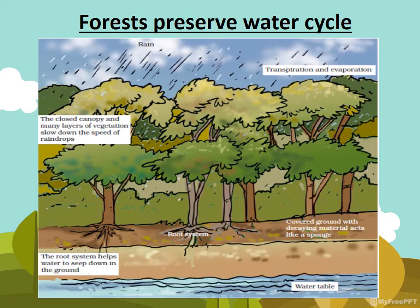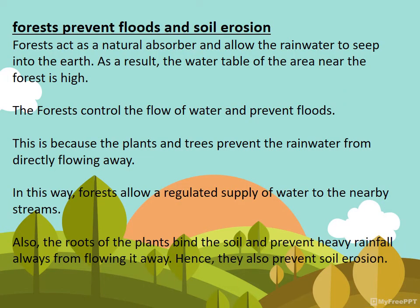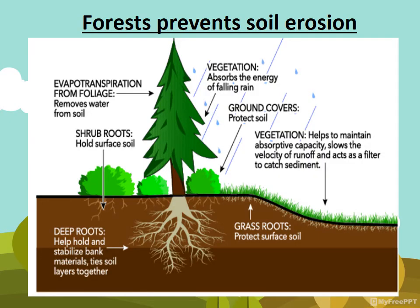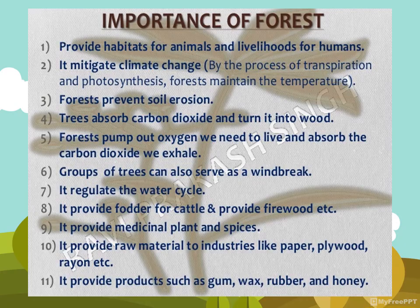Forests also preserve the water cycle. The collection of water from oceans and seas, its circulation, and bringing it back to the land is called the water cycle. Forests play a very important role in maintaining the water cycle. Forests also prevent floods and soil erosion — forests act as a natural absorber and allow rainwater to seep into the earth. Plants and trees prevent rain water from directly flowing away, and the forest allows a regulated supply of water to nearby streams. The roots of plants bind the soil and prevent heavy rainfall from washing it away, thus preventing soil erosion.